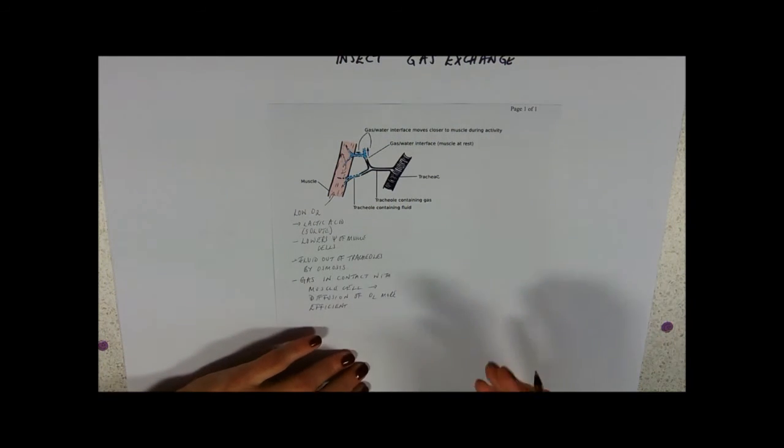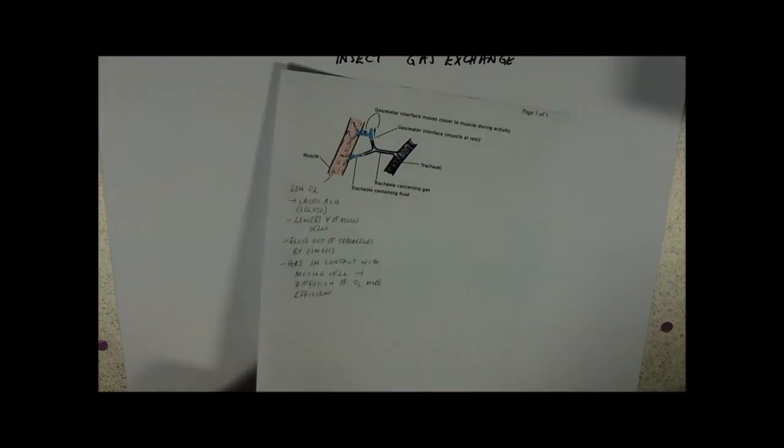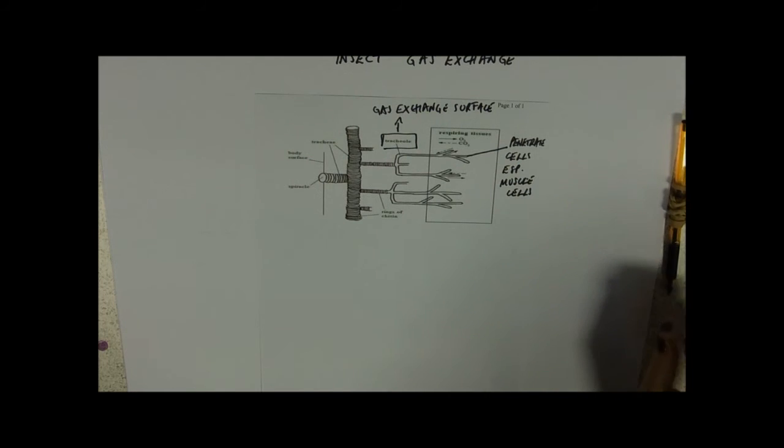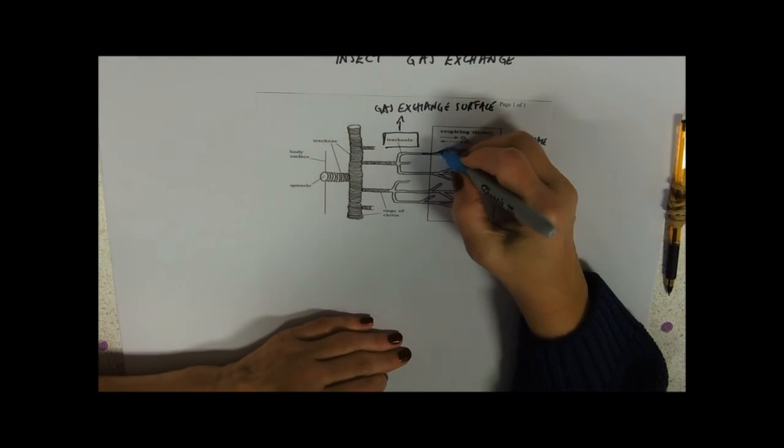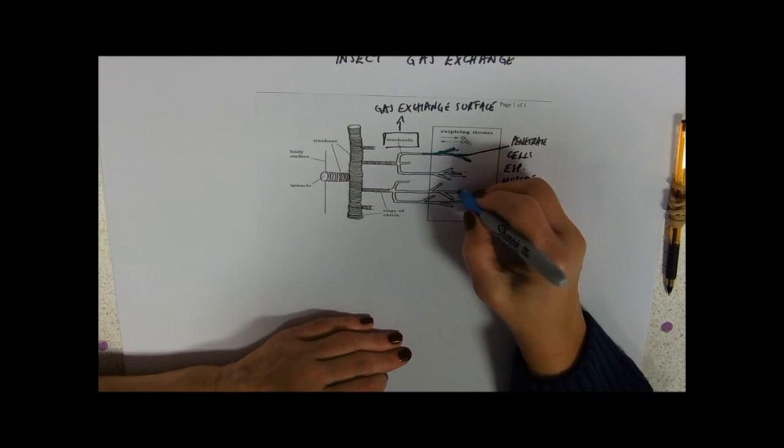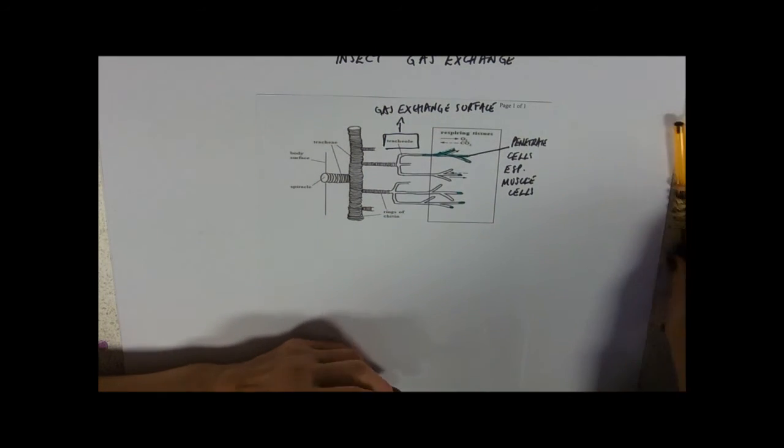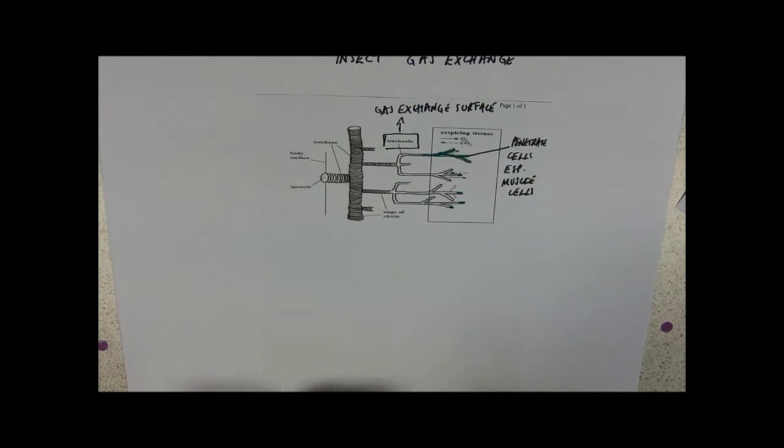So as the fluid's withdrawn into the cell, I'll just colour it in on here. So if we've got a muscle at rest, you might find that all of that is filled with water. So if it's withdrawn by osmosis and you've only got the very tips, then you've got really quite a lot of your tracheal exposed to the muscle delivering oxygen.